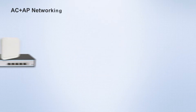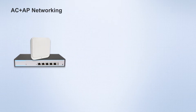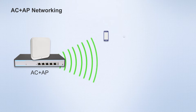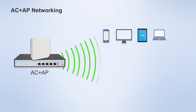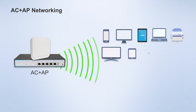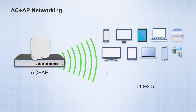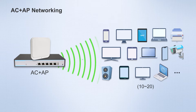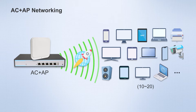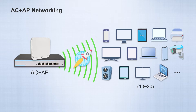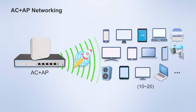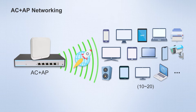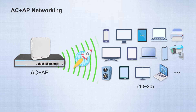Moreover, the AC plus AP setup supports more user connections. A typical home AP can support 10 to 20 terminals, with broader transmission ranges, ensuring optimal network performance for each client and avoiding network congestion and performance degradation.